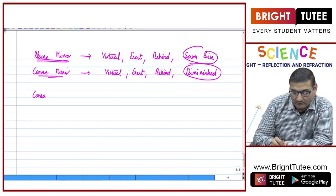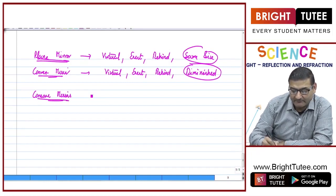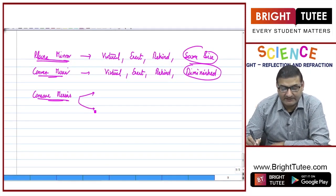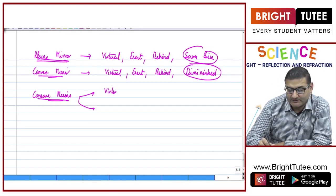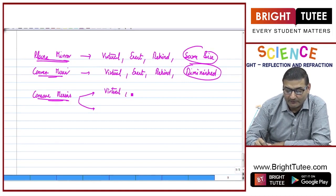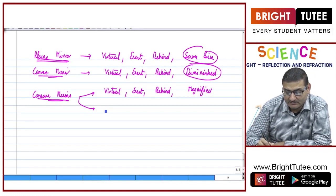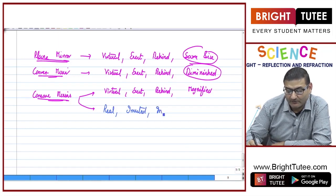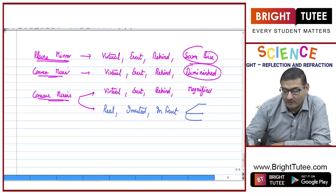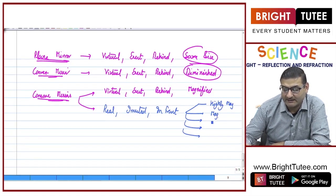When we talked about concave mirrors, we categorize them into two cases. First, when the object was placed between P and F: virtual image, erect image, image behind the mirror, but magnified. In the remaining 5 cases — object at F, between F and C, at C, beyond C, at infinity — we got a real image, inverted image, image in front of the mirror, and sizes varied: highly magnified, magnified, same size, diminished, and highly diminished.